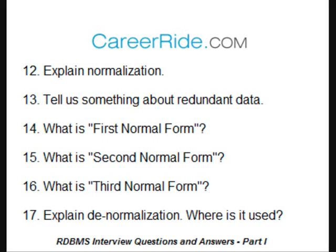What is second normal form? When you observe and practice the first two rules of normalization, the database is said to be in second normal form. It says: create separate tables for sets of values that apply to multiple records; create relationships between the new tables and their predecessors using foreign keys; and records should depend only on the table's primary key.